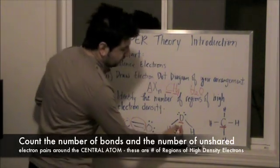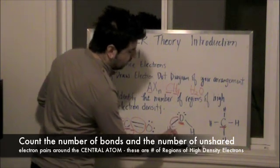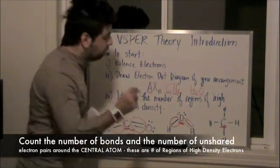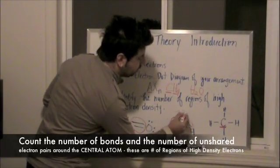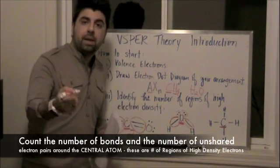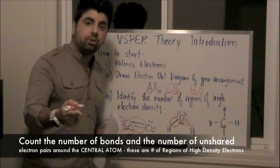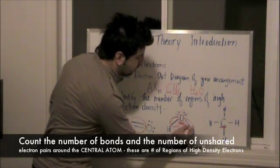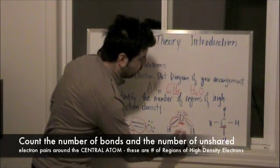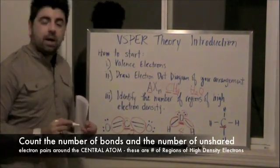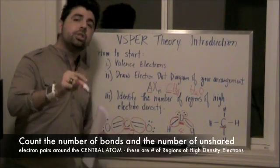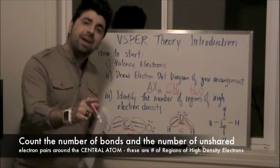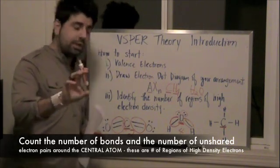If we look over with oxygen, oxygen has 1, 2 single bonds, but it also has 1, 2 lone pairs of electrons circling around this central atom. So in other words, we have 1, 2, 3, 4 regions of high electron density. So remember, it's not just the single, double, and triple bond, but it's also the unshared pairs of electrons that circle around the central atom.